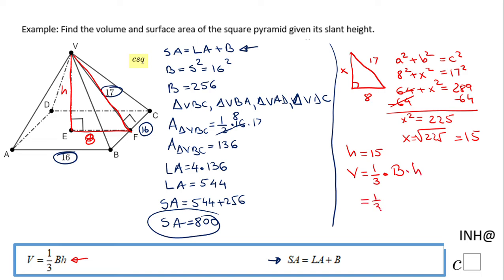1/3 times the area of the base is 256, and the height is 15. We can simplify here—3 goes into 15 five times. So the volume is 256 times 5, which is 1,280 cubic units.